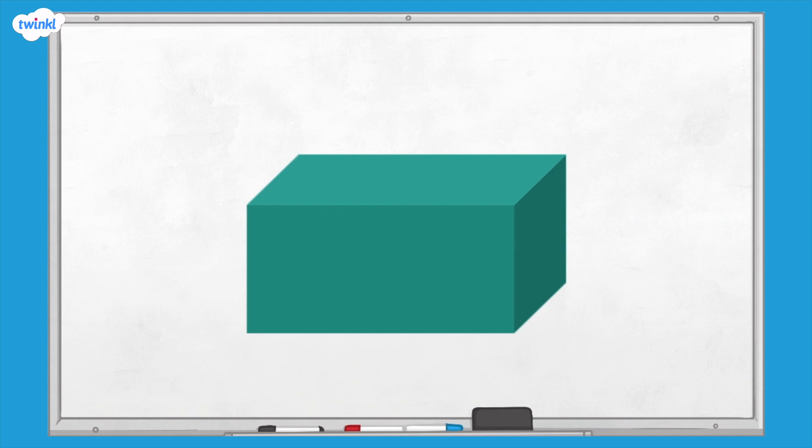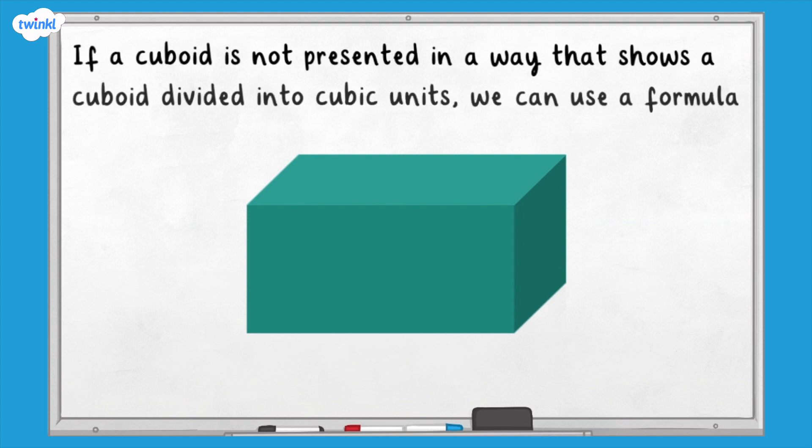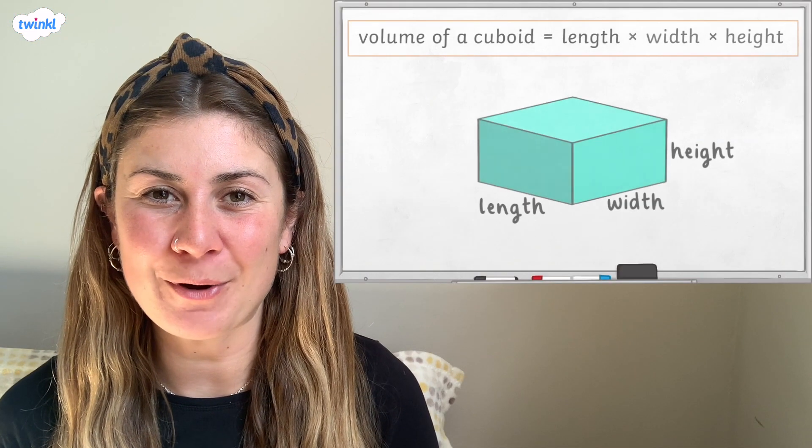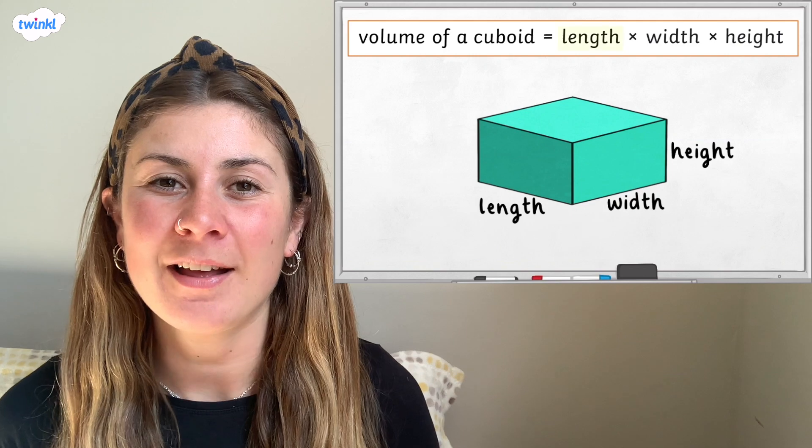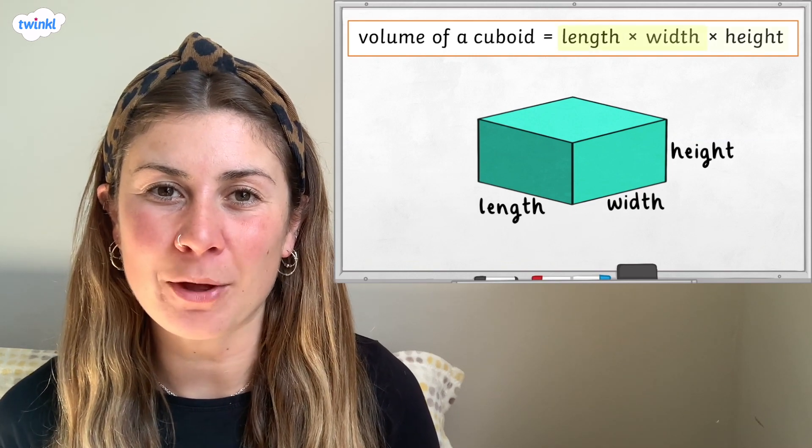Sometimes cuboids are not presented in a way that shows a cuboid divided into cubic units. If this is the case, we can use a formula to calculate the volume of a cuboid. To calculate the volume of a cuboid, we can use the formula length multiplied by width multiplied by height.